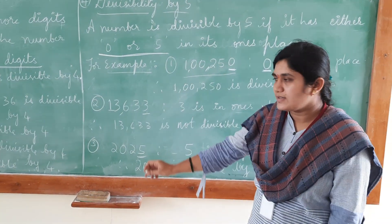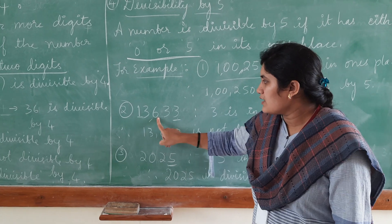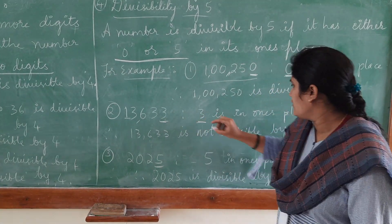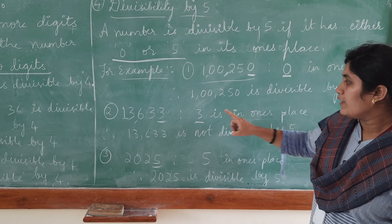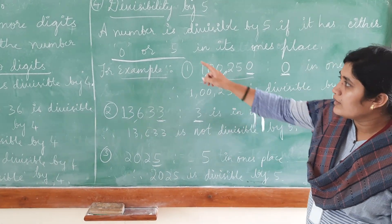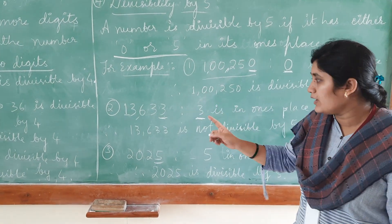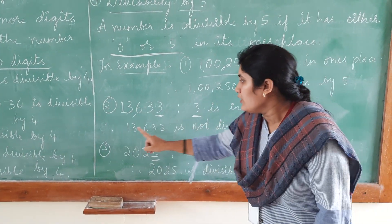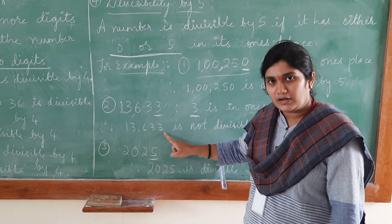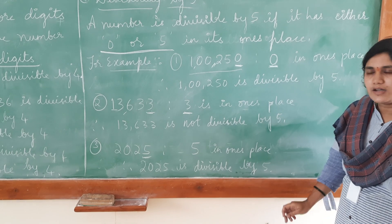Let us move on to the next example: 13,633. Here, 3 is in the ones place. According to the rule, either 0 or 5 should be there, but here we have 3. Therefore, the given number 13,633 is not divisible by 5.